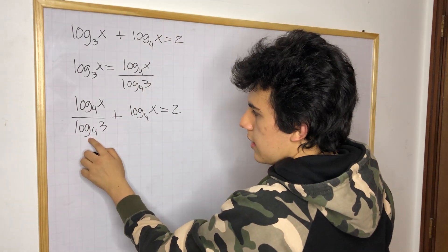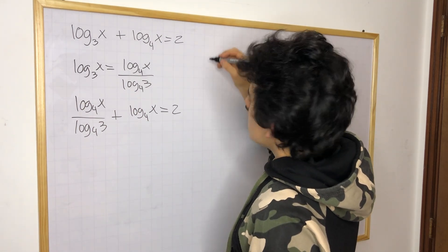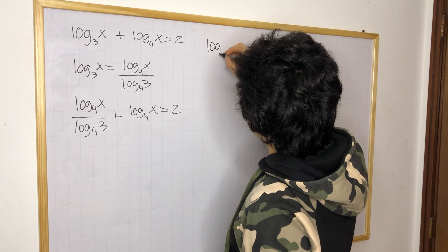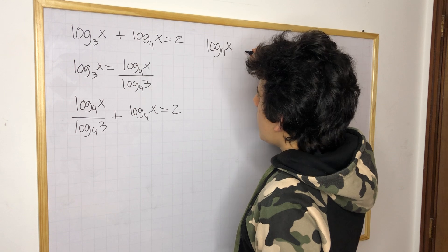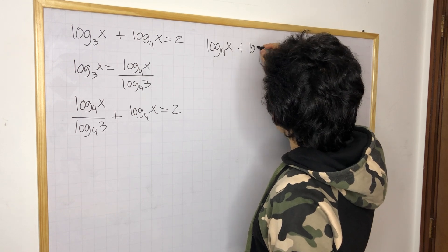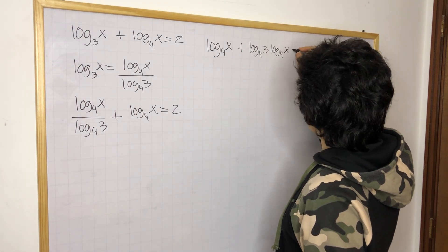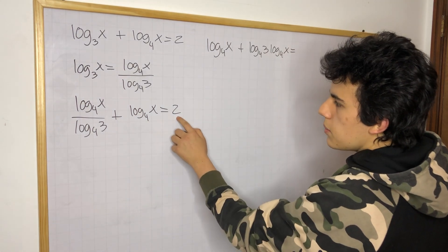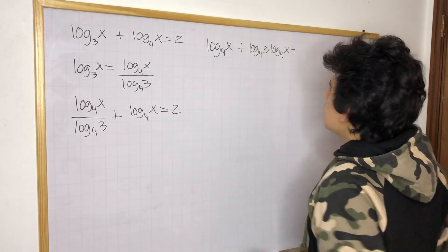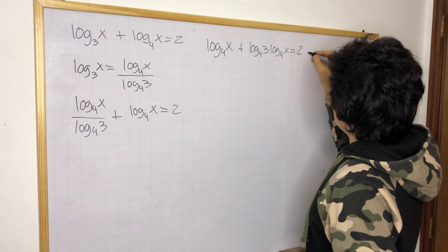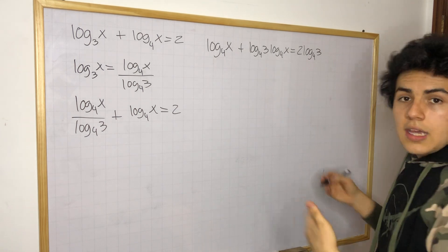Now we can multiply this denominator in the top and in the bottom of this number. So we're going to have log base 4 of x over — I'm just going to say log base 4 of 3 — times log base 4 of x is equal to... we have log base 4 of 3 as a denominator, but we're going to move it to the other side of the equation. So we have 2 times log base 4 of 3. This is how much we get for the next equation.